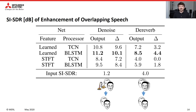As part of these experiments, we evaluated the best model configuration for enhancement. Here are results for both denoising and dereverberation of mixed speech, evaluating all four combinations of features and processors. We find that the learned basis outperforms the STFT by a reasonable margin, consistent with results established in the separation community. In addition, the BLSTM outperforms the TCN by a small margin, consistent with our earlier separation experiments.